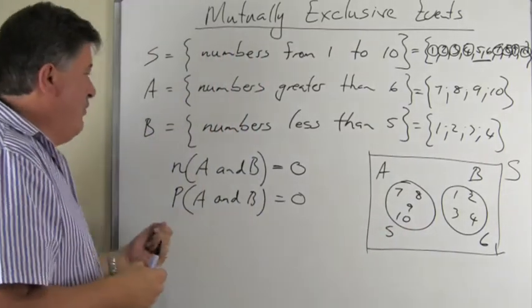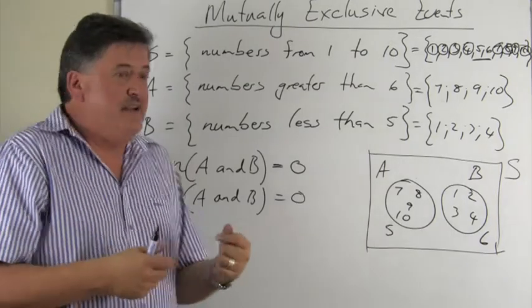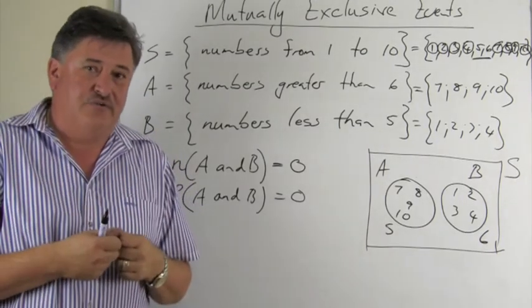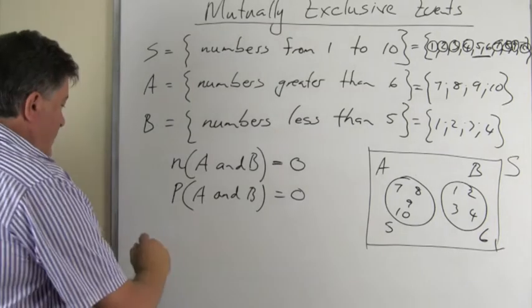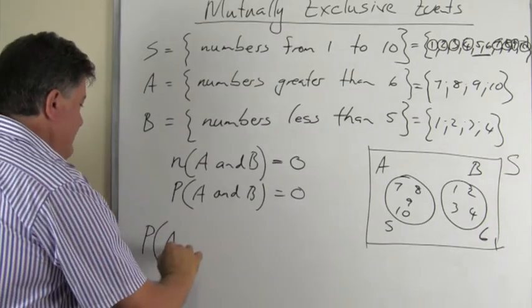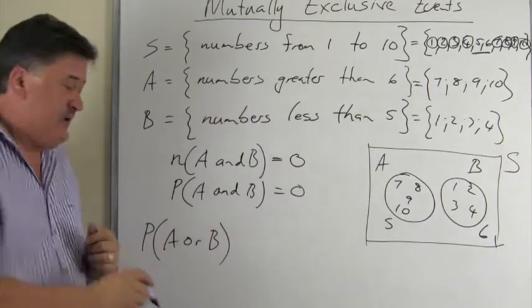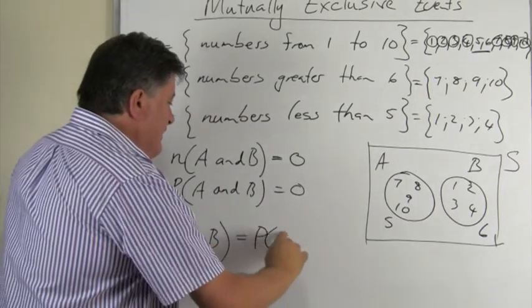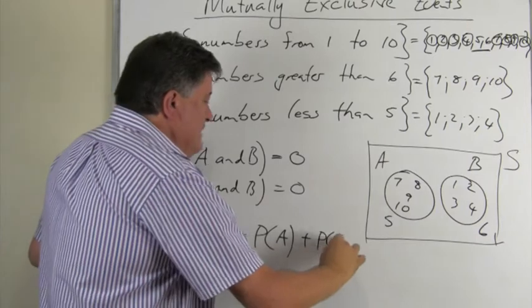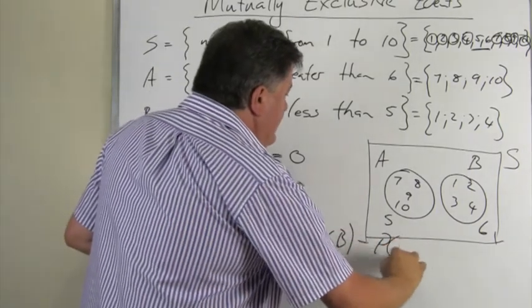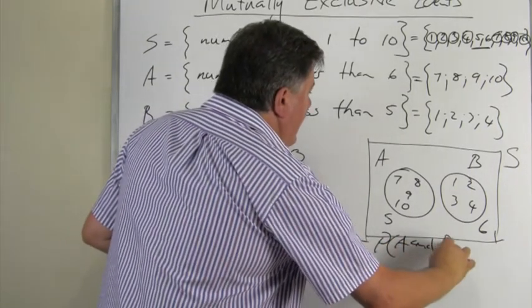So, what will now happen in terms of our inclusive principle? We said earlier that the P(A or B), our inclusive principle, is equal to the P(A) plus the P(B) minus the P(A and B).